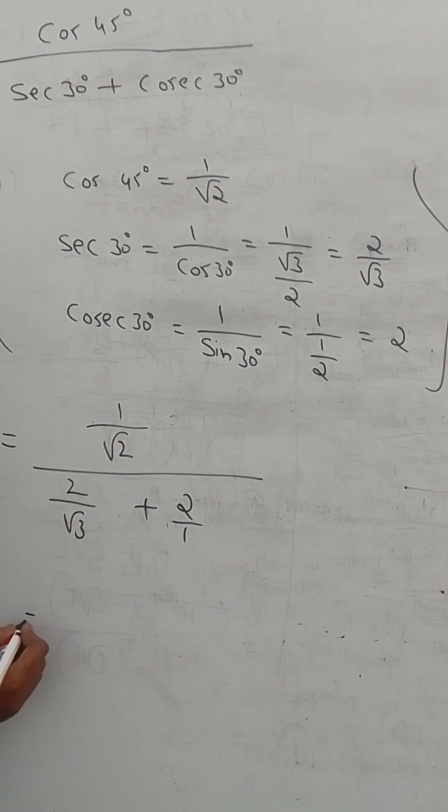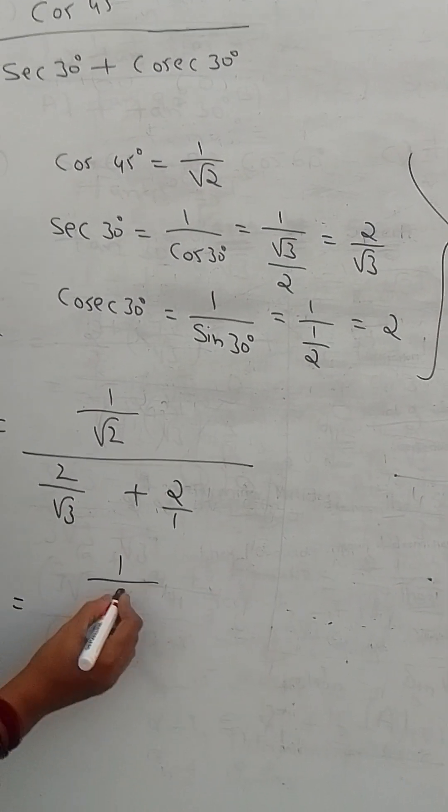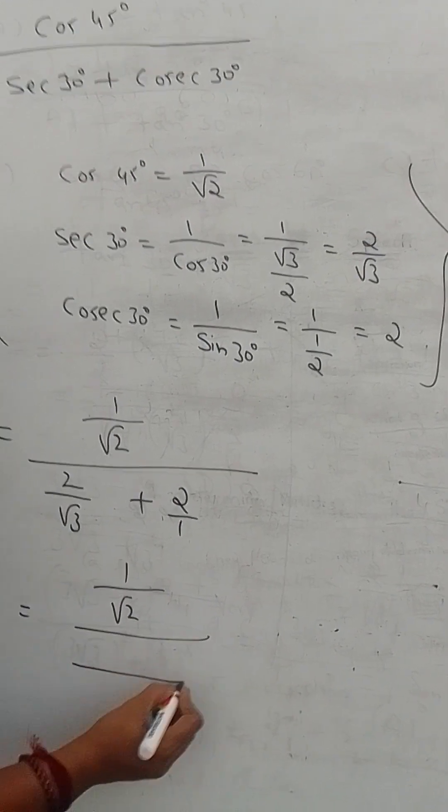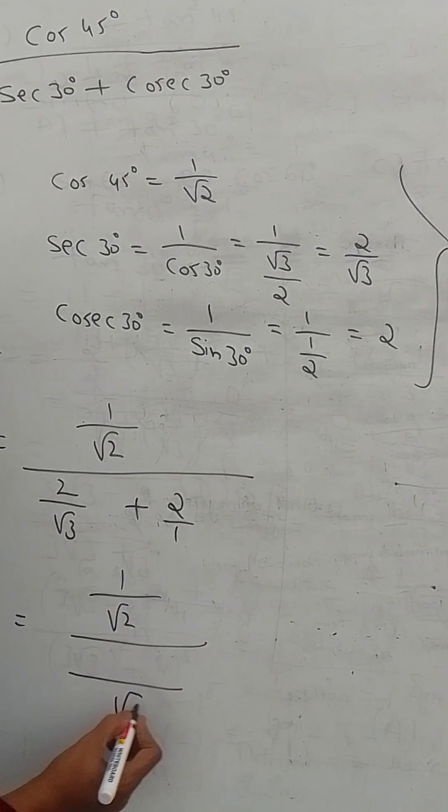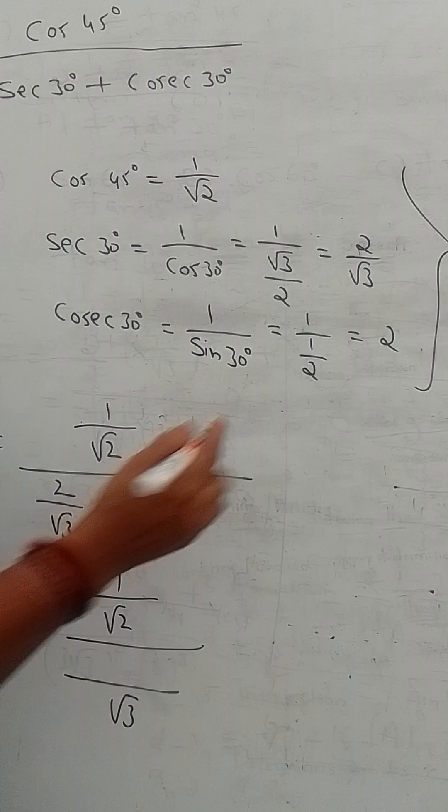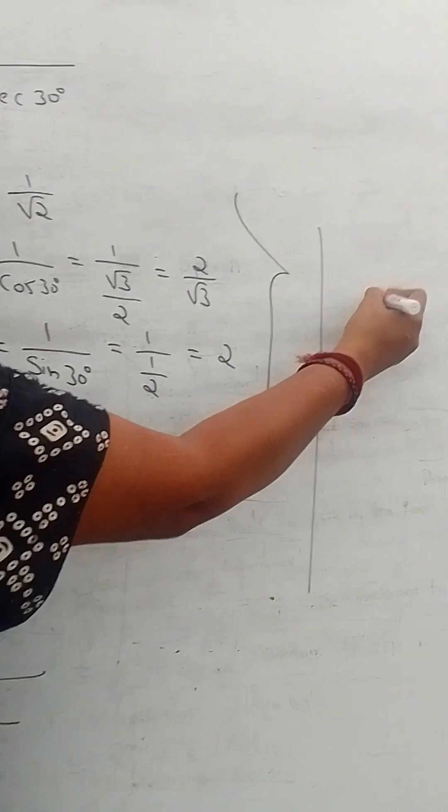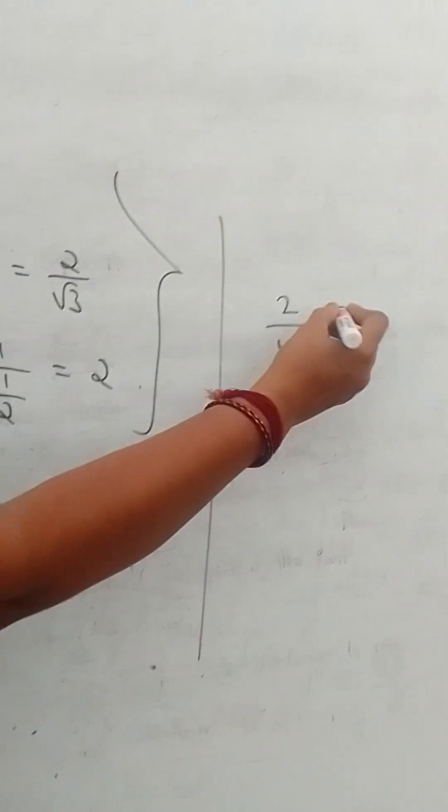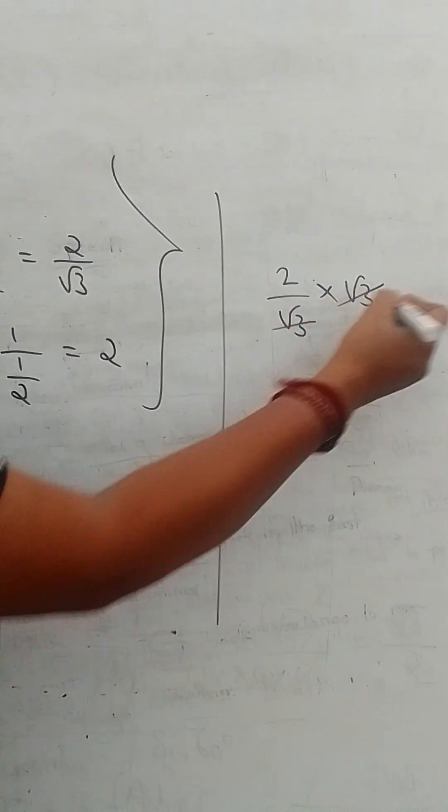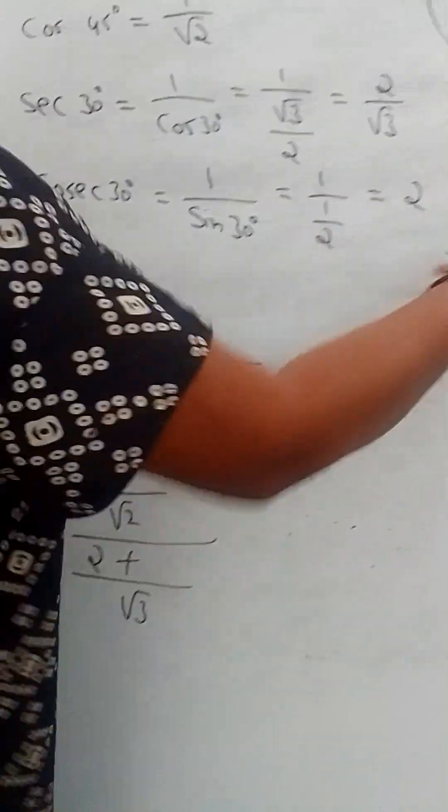Then take LCM. 1 by root 2 by LCM, root 3 is the LCM. Your first term into LCM: 2 by root 3 into LCM is root 3. Root 3, root 3 cancel, 2 remains.